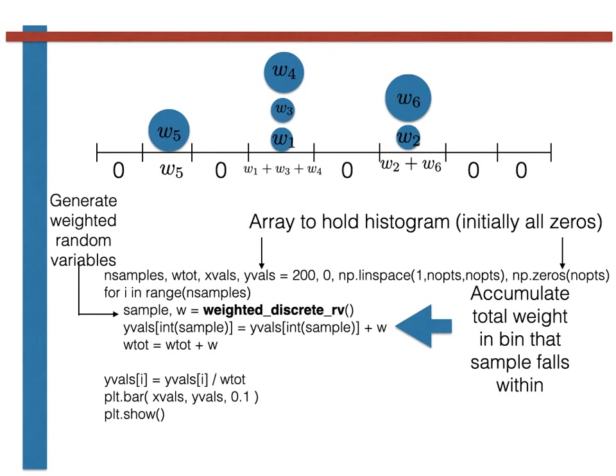We are thus using yvals to accumulate the total weight of the points that fall within the ith bin, as opposed to the total number of points that fall in the bin which is what we would have accumulated if the histogram was unweighted.